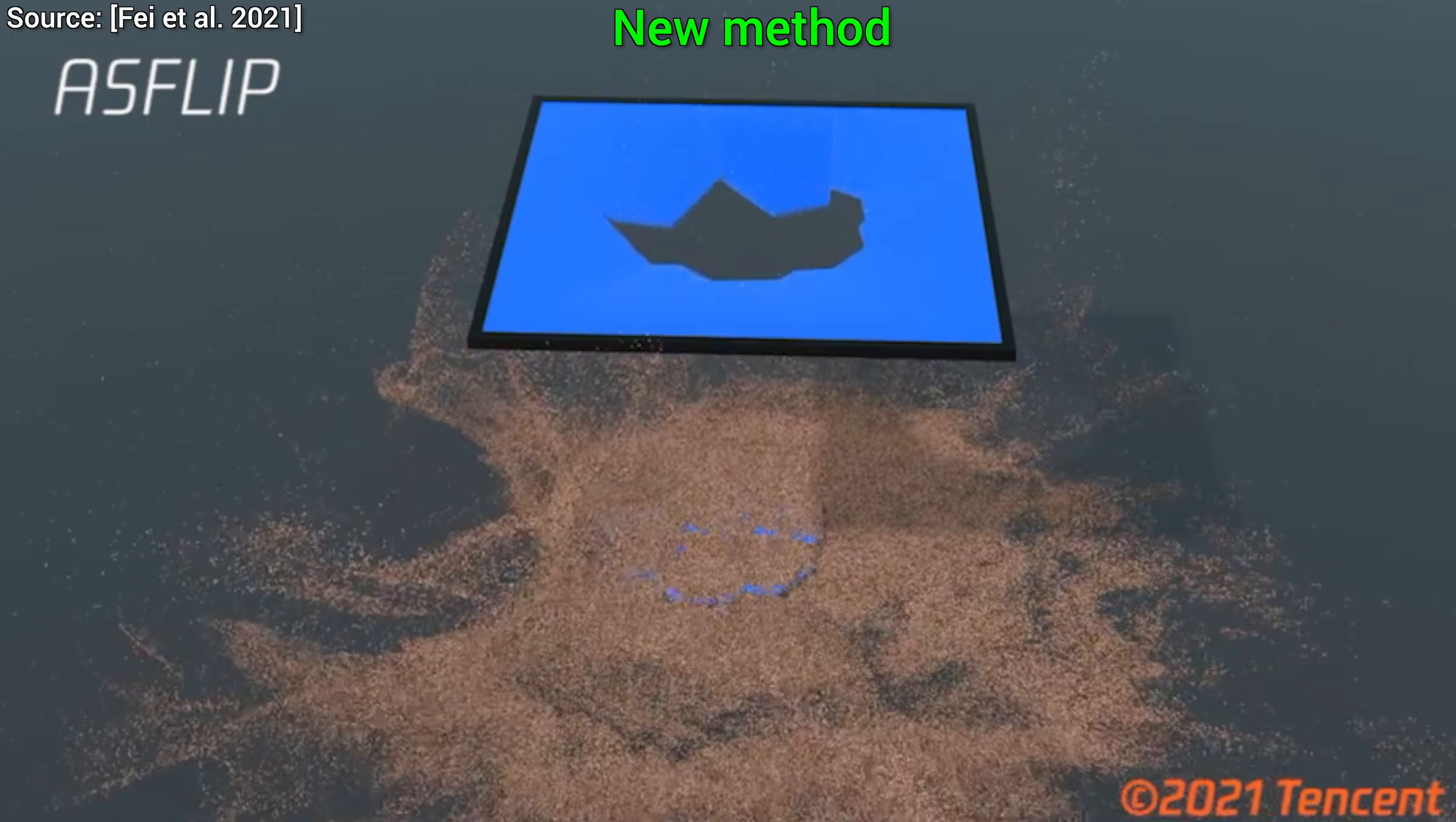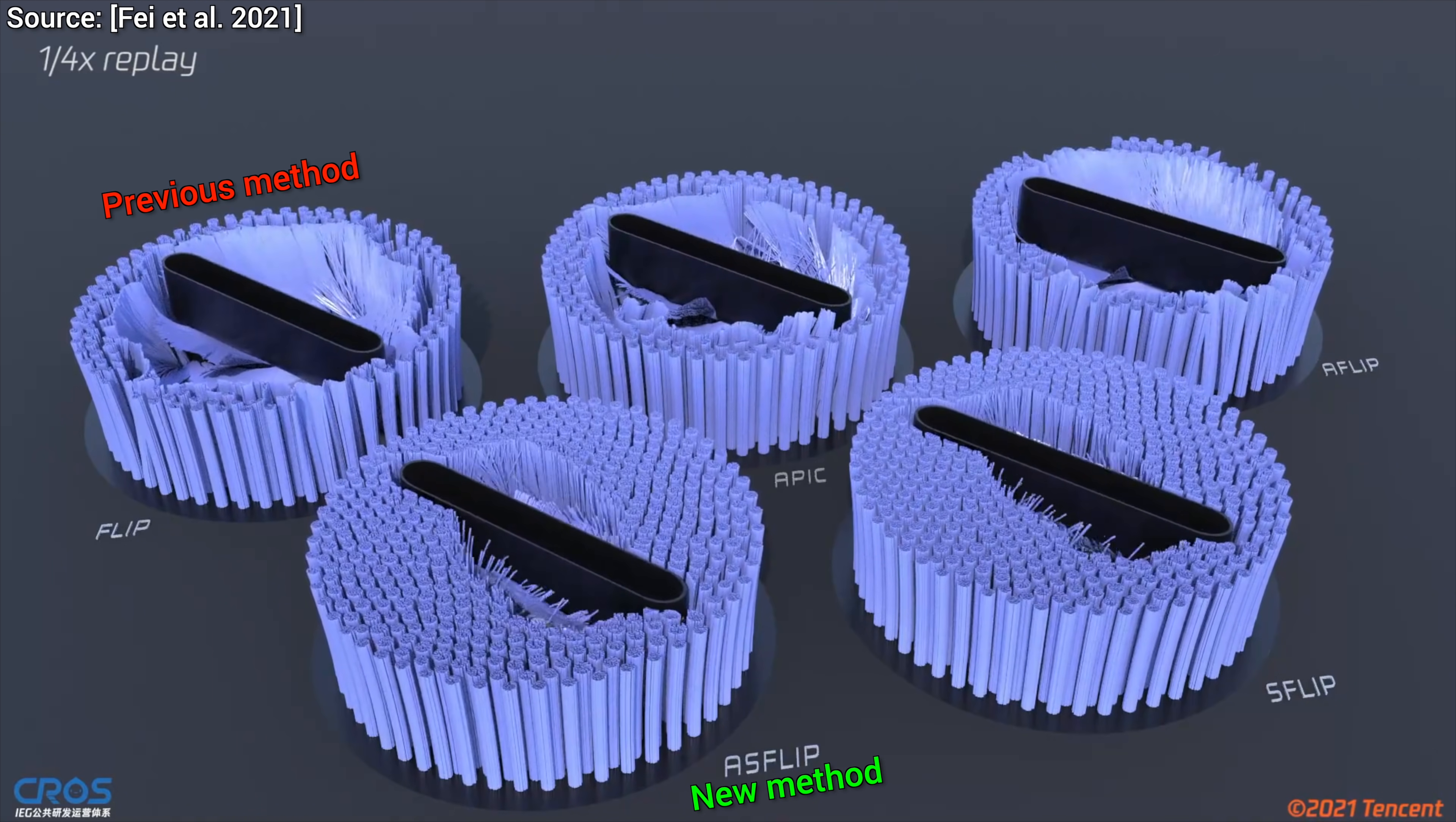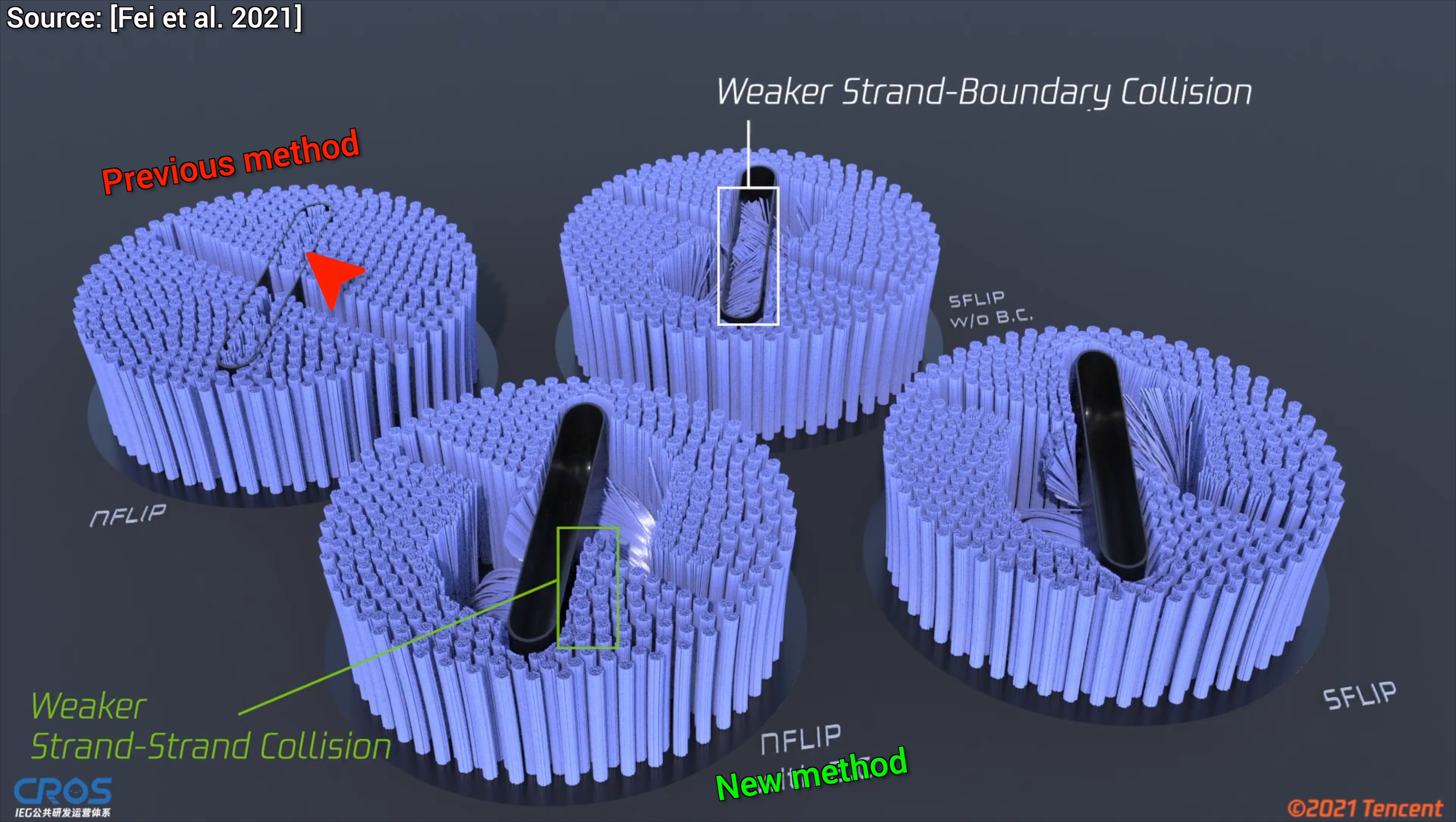And it does not stop there, it also simulates strand-strand interactions better than previous methods. In these cases, sometimes the collision of short strands with boundaries was also simulated incorrectly. Look at how all this geometry intersected through the brush. And the new method? Yes, of course, it addresses these issues too.